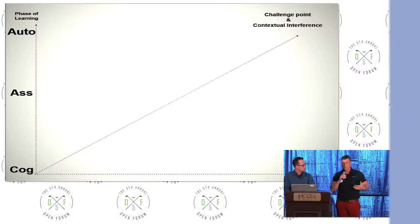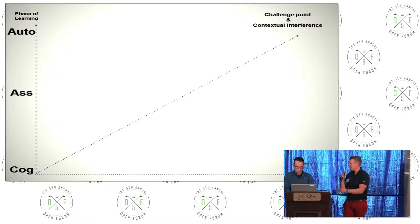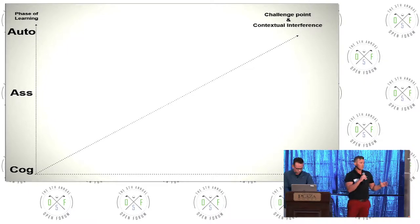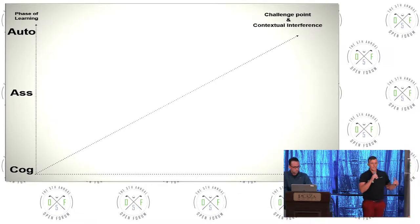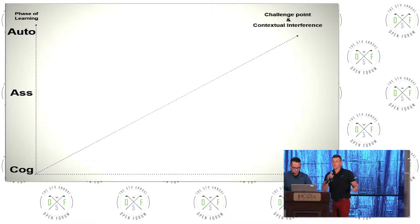On this diagram that I've created, and I create these because I don't always understand the research initially, so I create these for my own learning, and sometimes they really help us form models of coaching. On the left-hand side, that stands for cognitive, associative, and automated, and that's taken from the research done by Tim Lee and Richard Smith, the motor learning research.